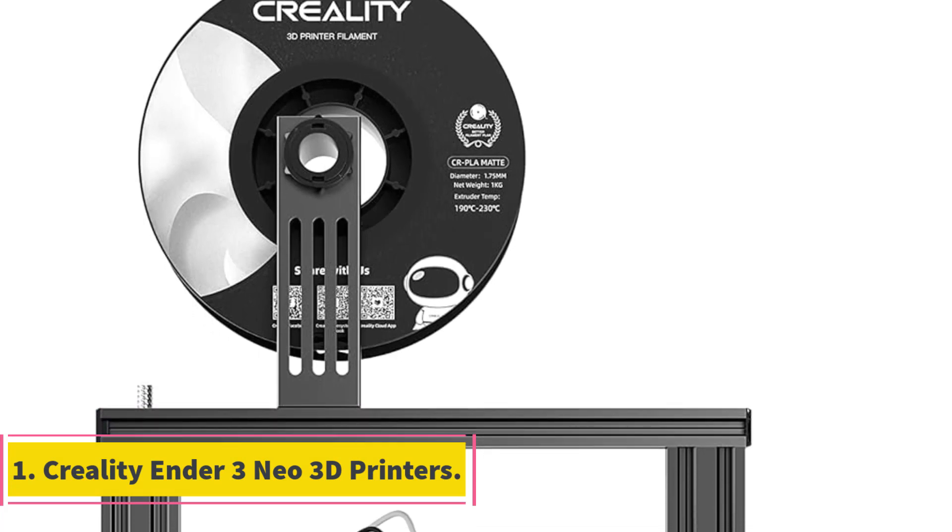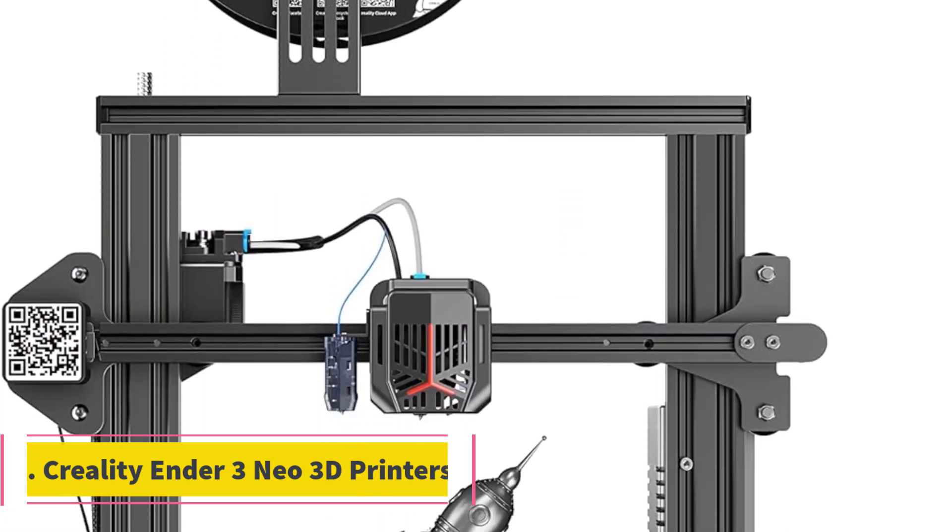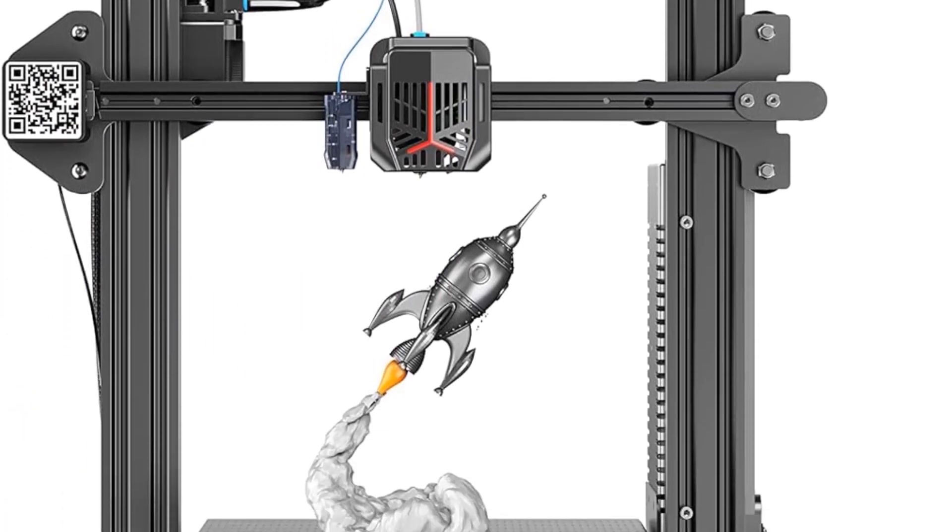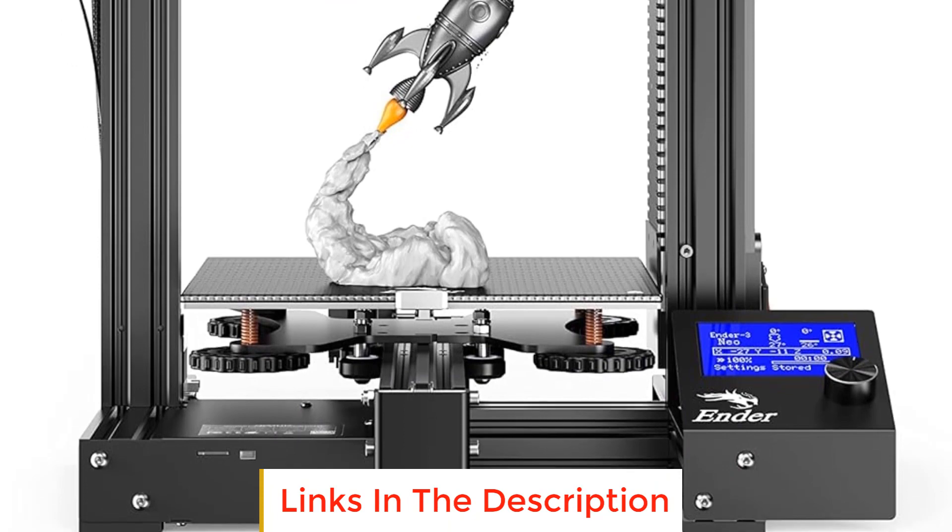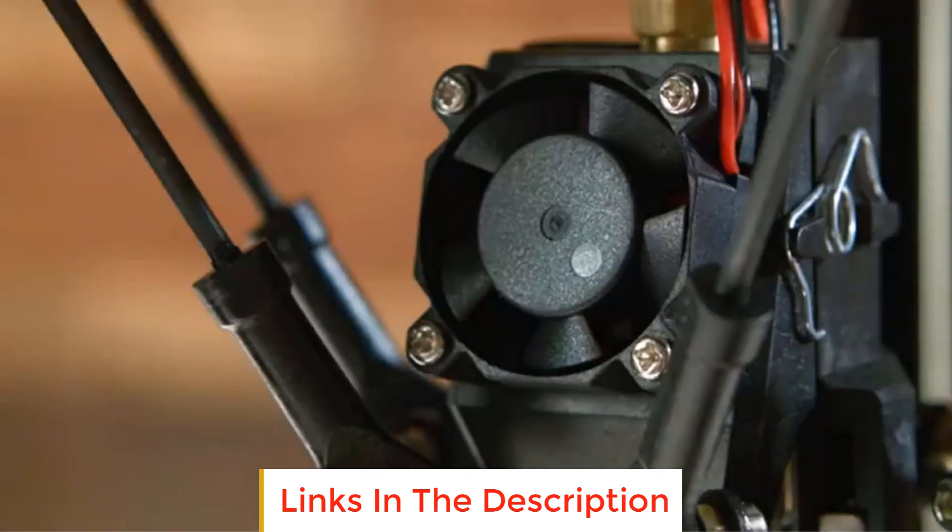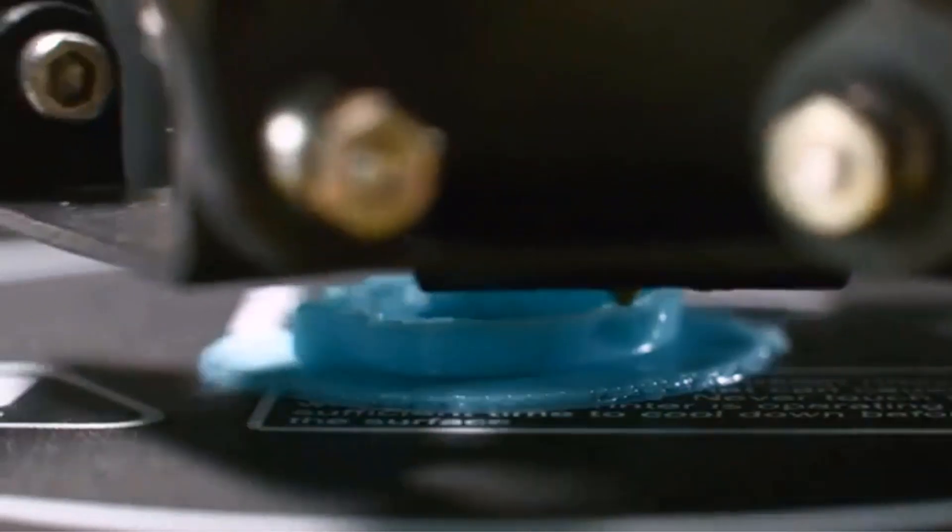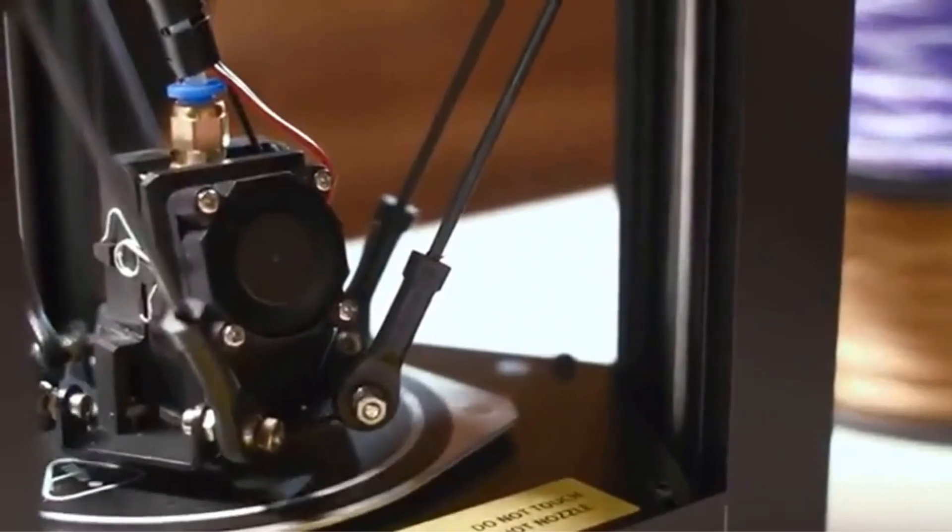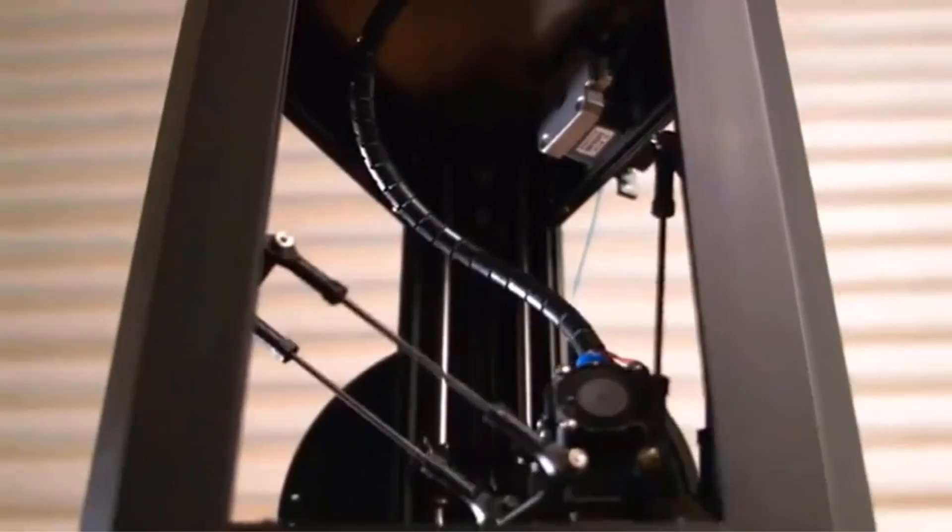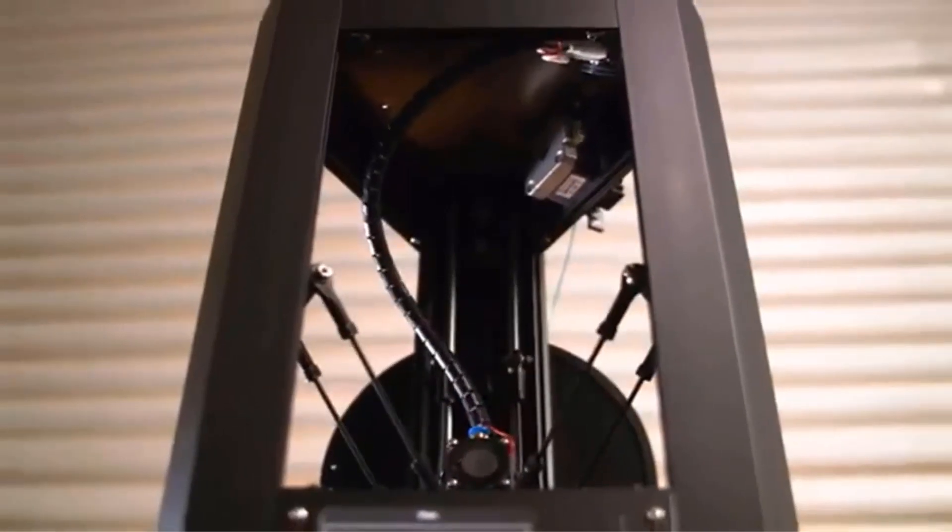Number 1. Creality Ender 3 Neo 3D Printers. The Creality Ender 3 Neo 3D Printer is a feature-packed printer that offers a smooth and reliable printing experience. One notable feature is the CR-Touch Auto Bed Leveling System. Equipped with a CR-Touch sensor, the printer can automatically identify the height between the nozzle and the platform. The 16-point ranging and intelligent compensation ensure easier and more accurate bed leveling, minimizing the need for manual adjustments.